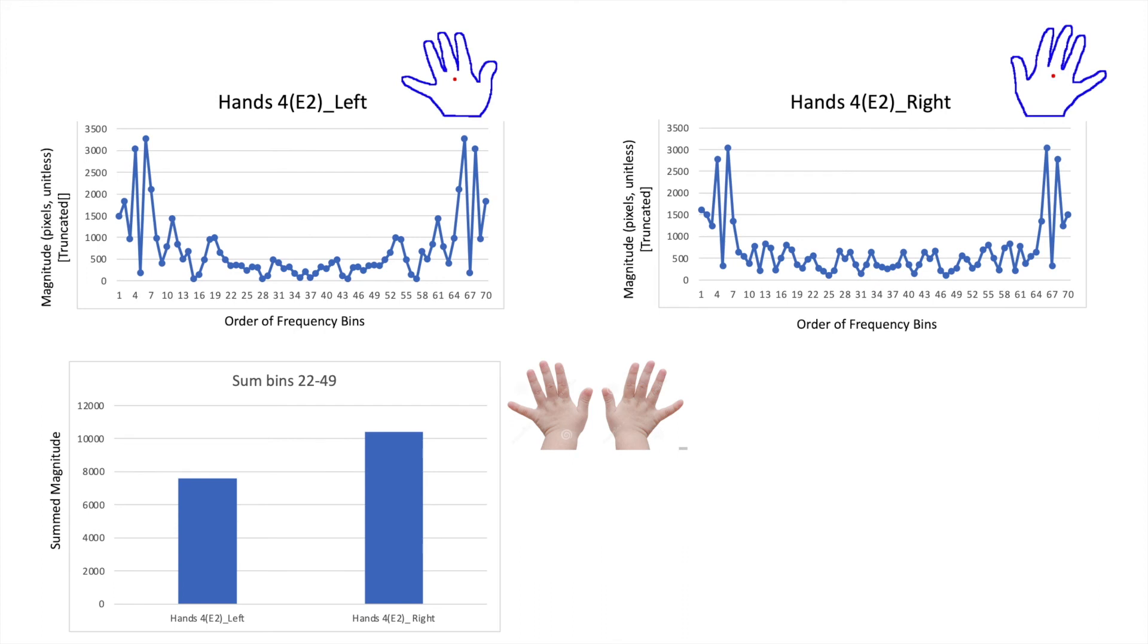Lastly, hands 4, being a set of babies hands, also work. The bar graph on the bottom shows that the right side is greater than left, which is consistent with our rules.